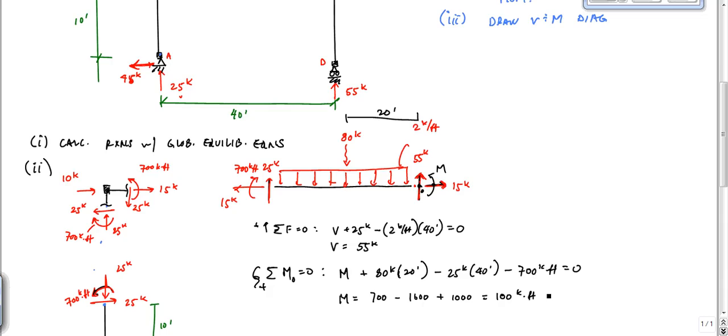Oh, the suspense and the drama. Oh, man. And M is equal to some number that should be 700 minus 1600 plus 1000 is equal to 100 kip feet. And it's positive. Meaning that the direction that we said is okay. So, I can turn this red now.